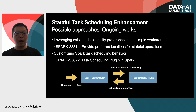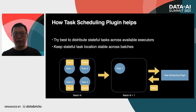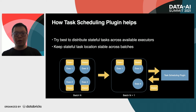So how might the task scheduling plugin work? If in micro-batch N, four states are scheduled on four different executors, then in the next batch N+1, our scheduling plugin wants to schedule the state on the same executors, so Spark doesn't need to reload the state from HDFS back to the executor state store.